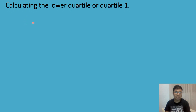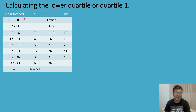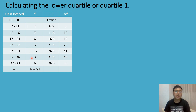We will construct the frequency distribution table. We need the class interval, which has a lower limit and an upper limit, and the class width is equal to 5. The frequencies have been counted, and adding them: 3+7=10, 10+6=16, 16+12=28, 28+13=41, 41+3=44, 44+6=50. So 50 is the total number of students who took the exam.